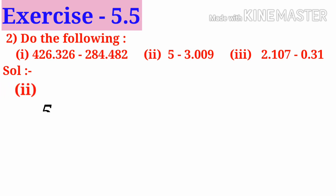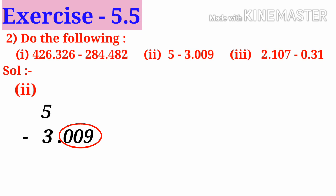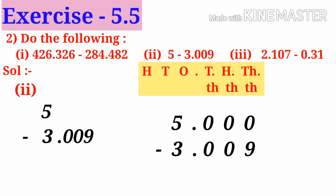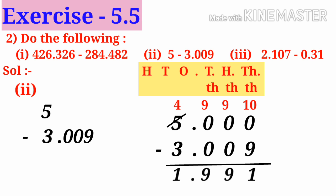Number 2: 5 minus 3.009. Observe that the maximum decimal places are 3 in the second decimal fraction. So to convert into like decimals, first put the decimal point and then add 3 zeros to the first, making it 5.000 minus 3.009. Now subtract: 10 minus 9 is 1, 9 minus 0 is 9, 9 minus 0 is 9, and 4 minus 3 is 1. So 1.991 is the answer.